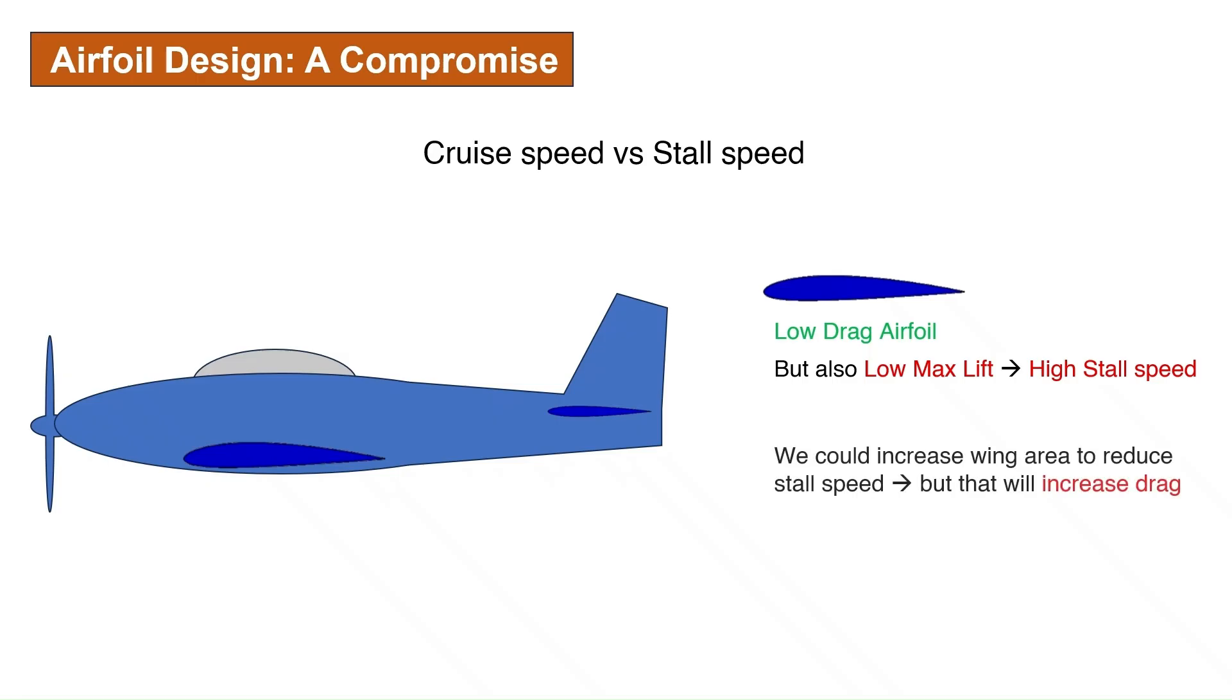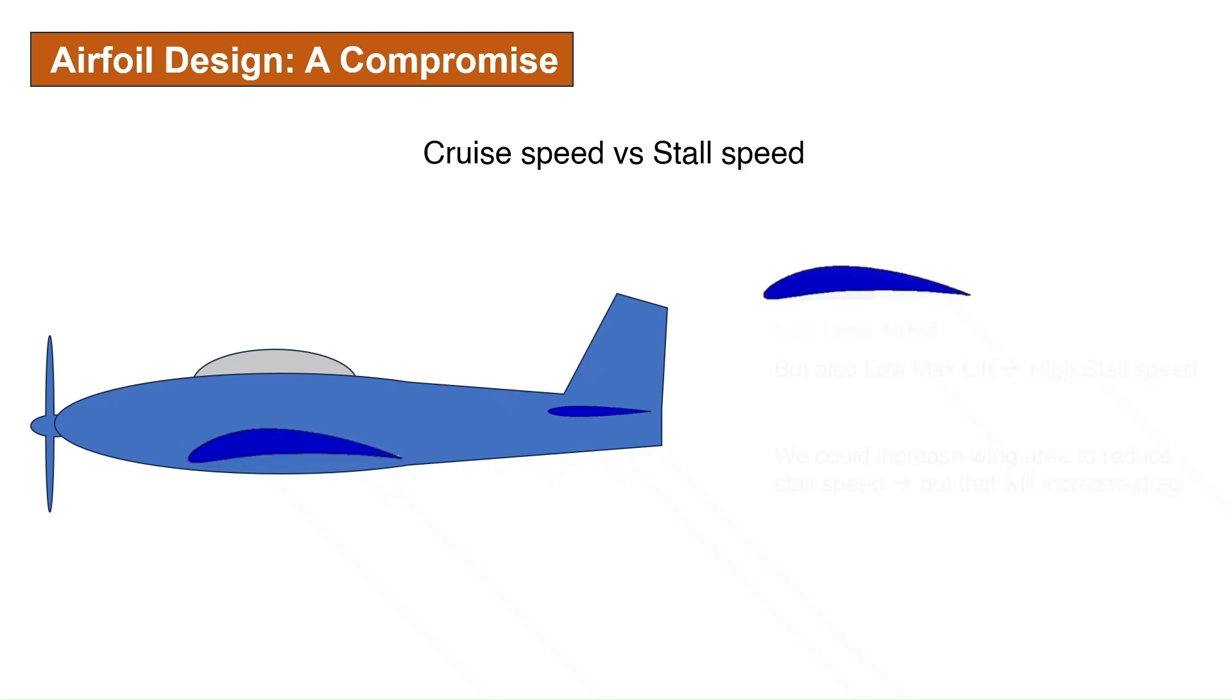We could increase the wing area in order to decrease the stall speed, but this will come at a cost of increased parasitic drag. This defeats the original goal of using a low drag airfoil. On the other hand, if we choose an airfoil with a high max lift coefficient to decrease the stall speed, generally that airfoil will also have a high drag coefficient.